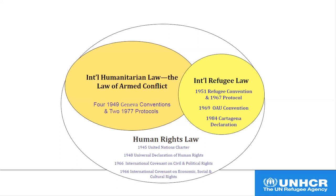Human rights law lays down obligations of governments to protect the inherent rights and freedoms of individuals or groups. You're probably also somewhat familiar with international humanitarian law, IHL, which is the law of armed conflict. IHL seeks to limit the effects of armed conflict and to protect civilians. International refugee law deals with the rights of a particular group of people who are outside their home country and who need protection. So refugee law is related to, but distinct from, human rights law and IHL.